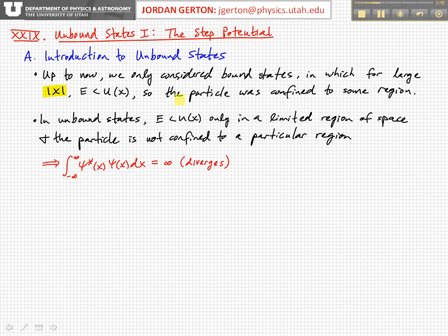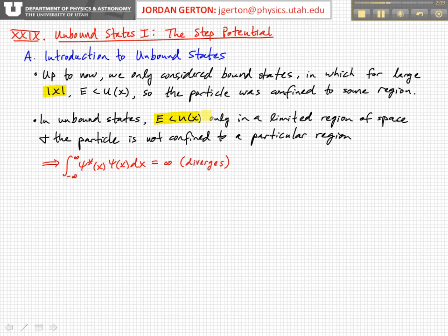In unbound states, in contrast, the energy is less than the potential energy in only some regions of space. And so we don't have the same kind of boundary conditions that we would have in bound states, although there still can be certain boundary conditions which must be satisfied.